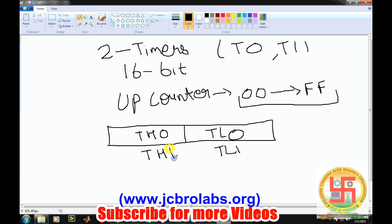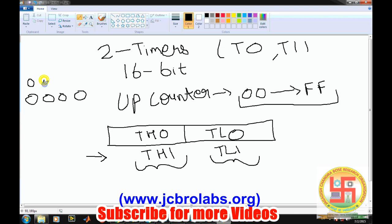If you want to save a certain value in Timer 1, the lower part is accessed by TL1 and the higher part by TH1, and similarly for Timer 0. The timer counts one step per clock cycle — so if the value is 0x0000 it goes to 0x0001 on one clock cycle. In this way it keeps counting clock cycles, and based on that we can provide a delay.